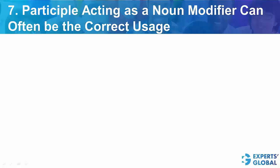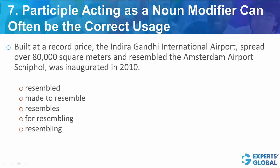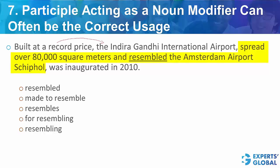Let's understand this through a GMAT-like question. Please pause the video and solve it. Look at the construction here. You have a modifying phrase referring to a noun. After the comma, the noun is the Indira Gandhi International Airport. After this, we have some extra information between two commas. What is the role of this extra information? To tell something about the airport.